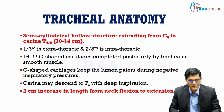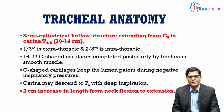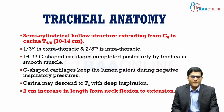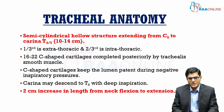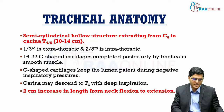Anteriorly we have the C-shaped cartilages, and posteriorly since these cartilages are deficient they are completed by the tracheal smooth muscle. The C-shaped cartilages help keep the lumen of the trachea patent during negative inspiratory pressures. With neck movement from flexion to extension, the trachea increases in length by two centimetres, and with deep inspiration the carina may descend from T4–T5 to T6.